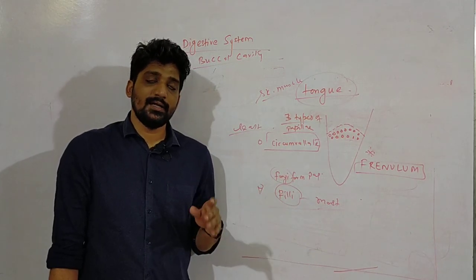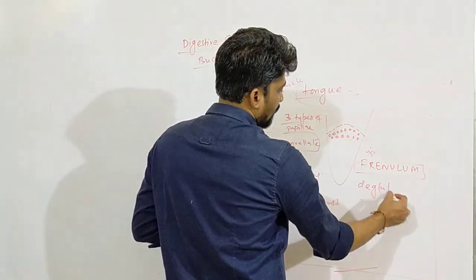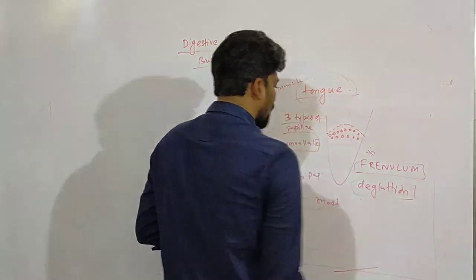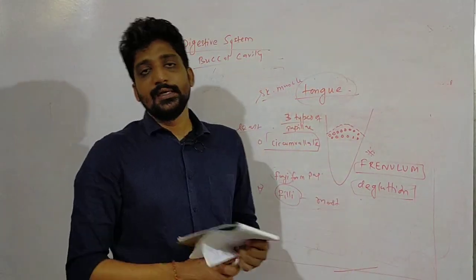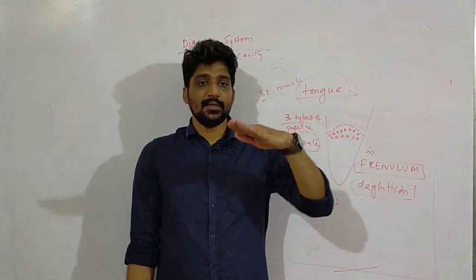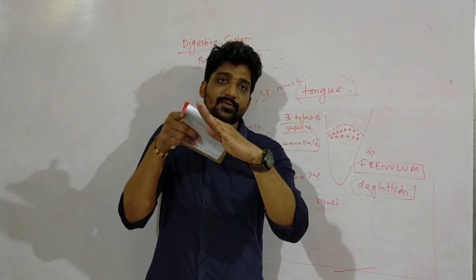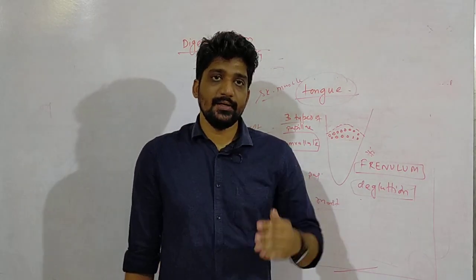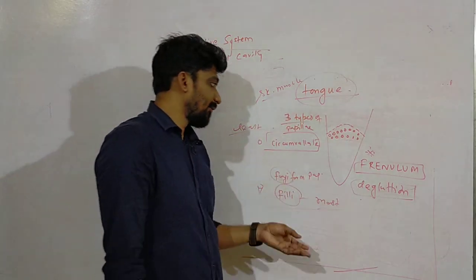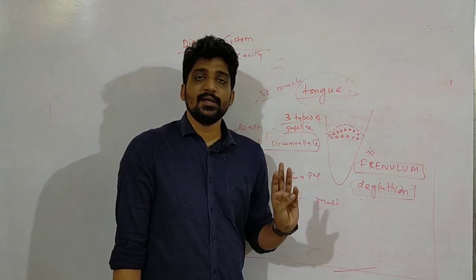Then we have the tongue for the proper mixing of the food and there is an important term related to the digestion of food which is called as deglutition. Deglutition is nothing but swallowing down of the food by the upward movement of the tongue. So the moment the tongue moves up the food which is mixed with the saliva goes down - this process is called deglutition.